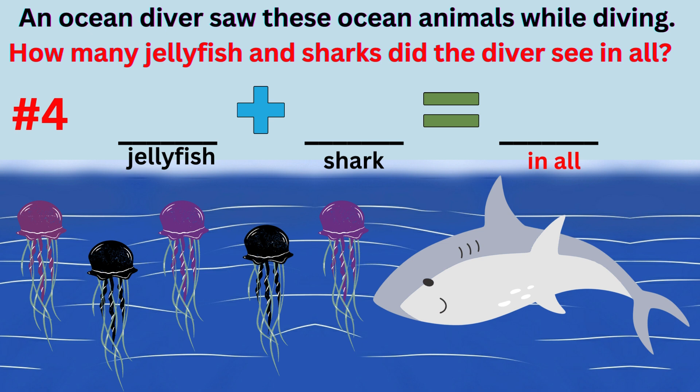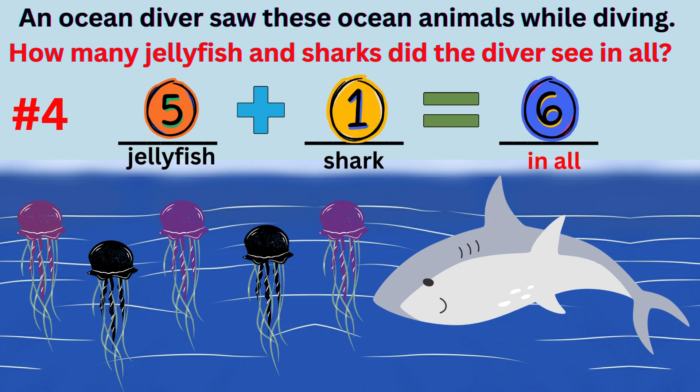Word problem number four. An ocean diver saw these animals while diving. How many jellyfish and sharks did the diver see in all? The answer to the question is the ocean diver saw six ocean animals in all. The addition sentence is five jellyfish plus one shark equals six ocean animals.